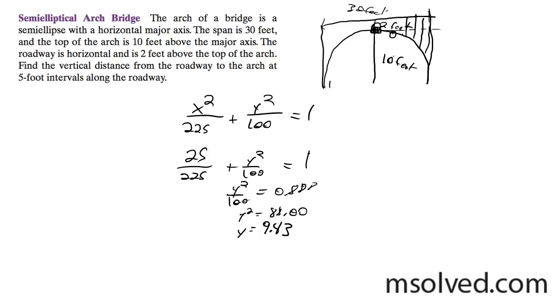So we take 12, because this is actually 12 feet from the bottom to the top of the bridge, and we subtract that from there. And we end up with, for 5 feet away, 2.57 feet.